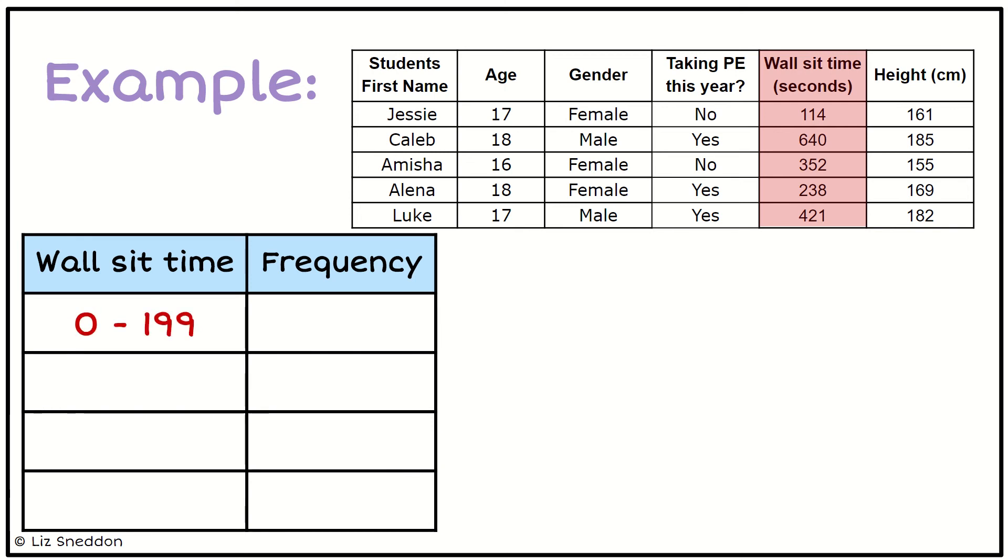I'm going to go from 0 to 199, 200 to 399. Notice how I'm not overlapping: 400 to 599 and 600 to 799.